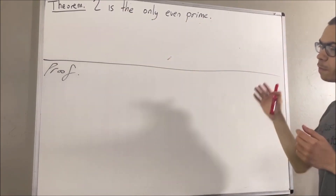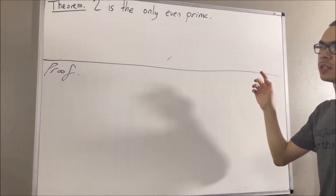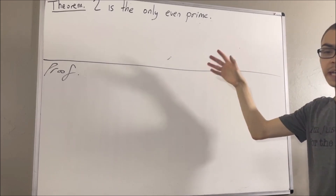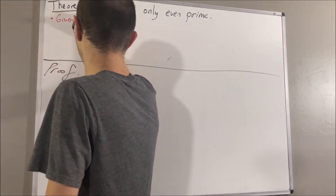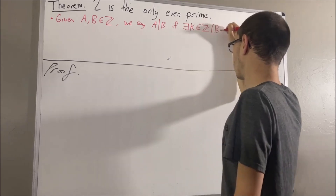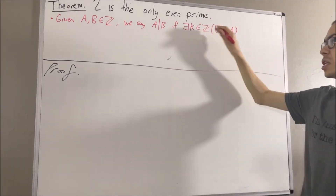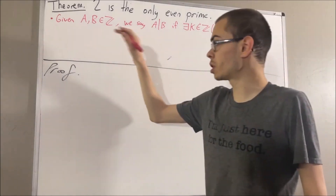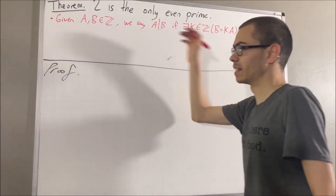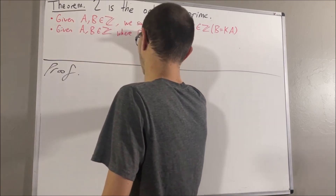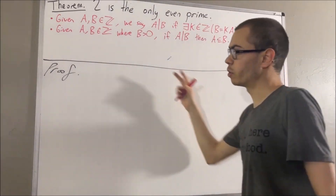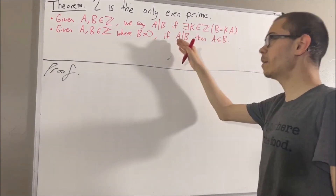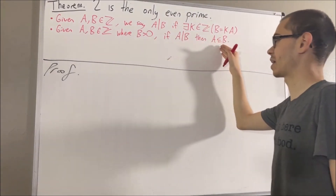Now, before we get to the proof, let's get some context. To start out, given any two integers a and b, we say that a is a divisor of b if there exists an integer k such that b is equal to k times a. And a result that follows from this is: given any two integers a and b where b is greater than zero, if a is a divisor of b, then a is less than or equal to b.